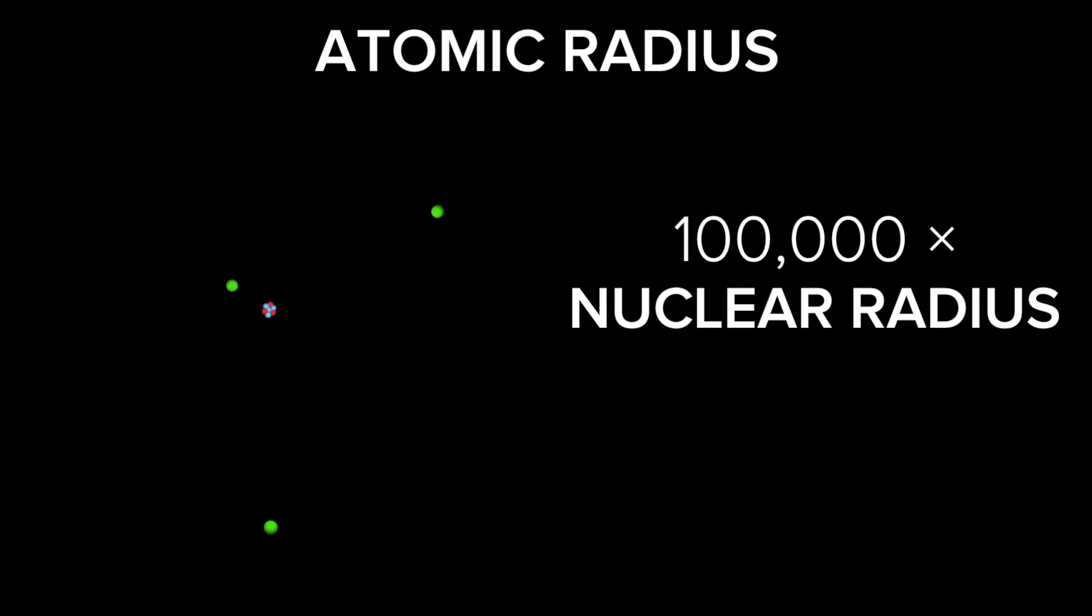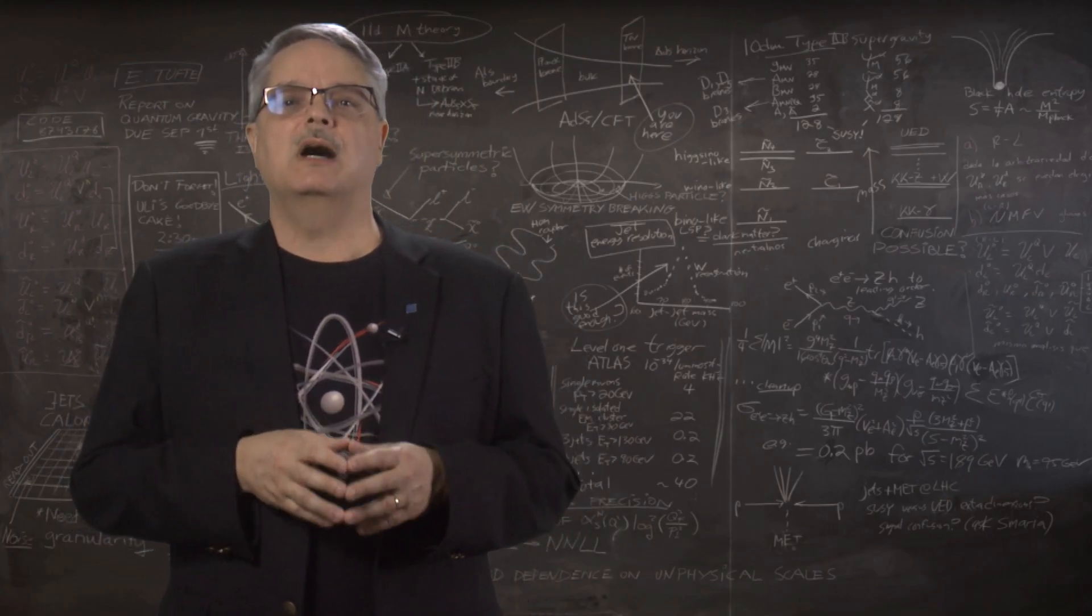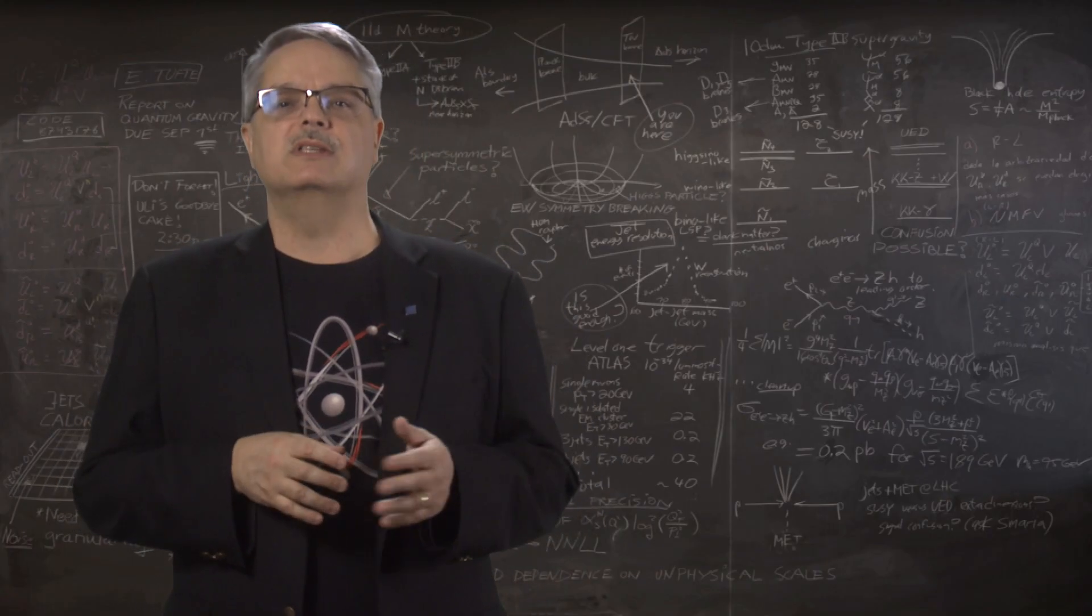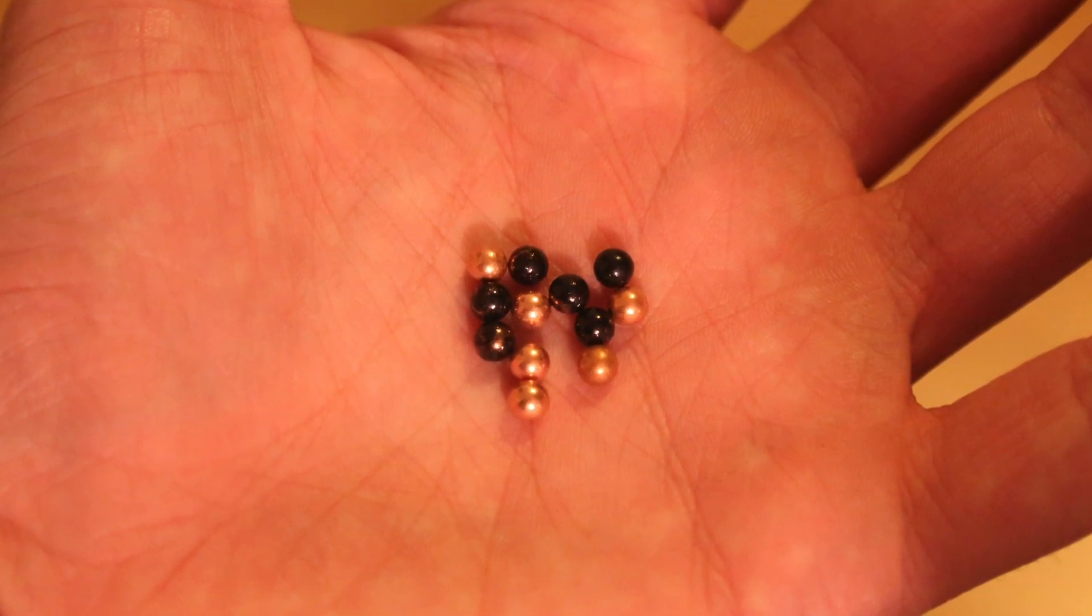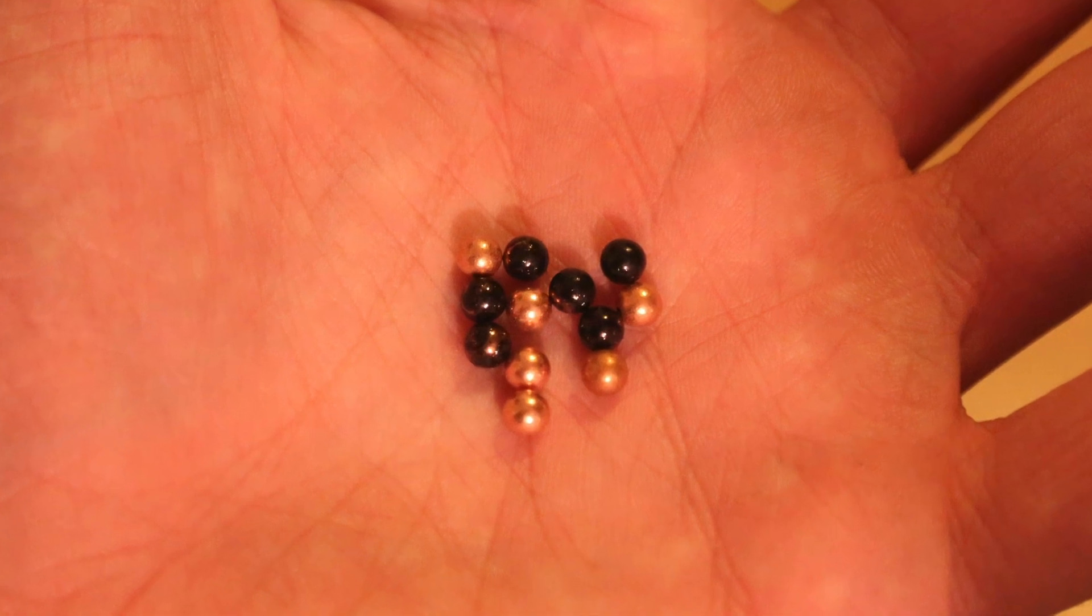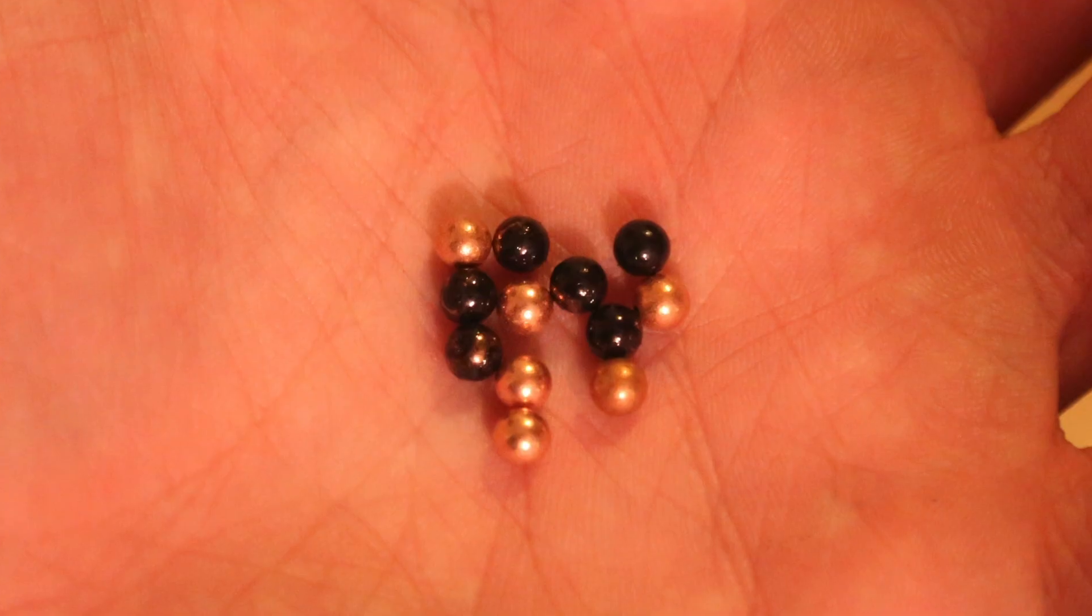Perhaps the easiest way to understand this is by way of analogy. Suppose we were able to somehow enlarge protons and neutrons to be the size of these BBs we see here in my hand. For concreteness, I'm using these BBs to represent the nucleus of a carbon atom.